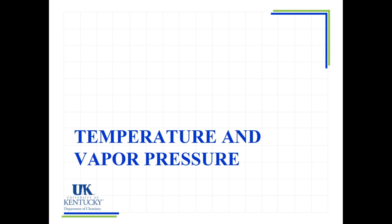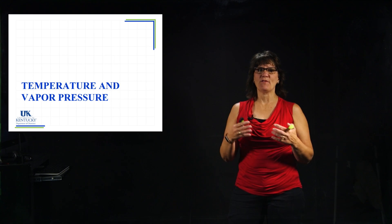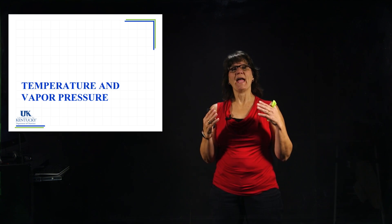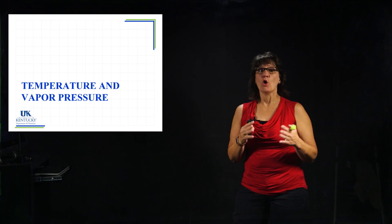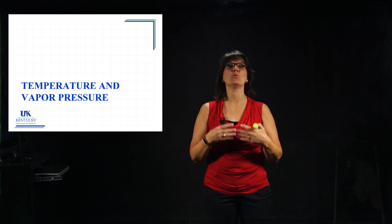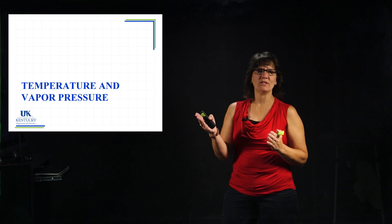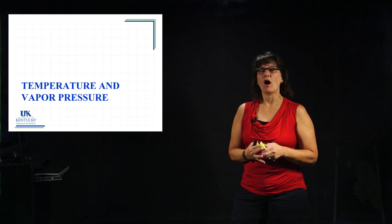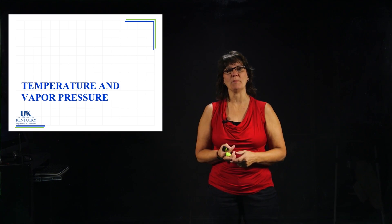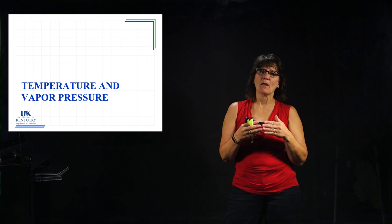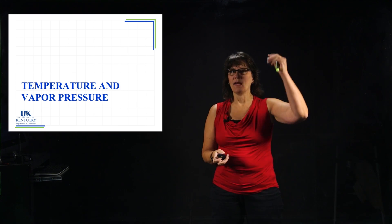In our last lesson, we looked at what vapor pressure was and learned that it's affected by temperature, the strength of intermolecular forces, and it's the point where evaporation and condensation happen at the same rate. We're going to focus on the temperature aspect and get into calculations, being able to see what the vapor pressure would be if we knew the temperature and vice versa. By the end of this lesson, we'll look at how external pressure affects boiling point, because boiling point and vapor pressure are tied together. The definition of boiling point has to do with vapor pressure and external pressure.